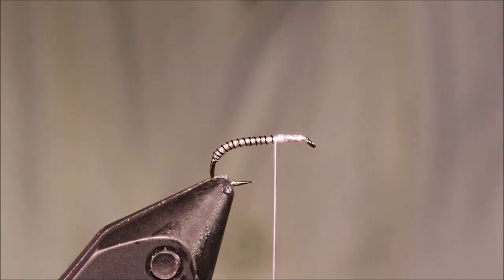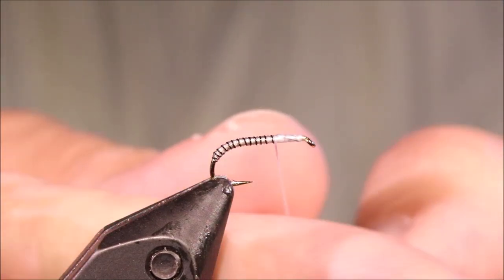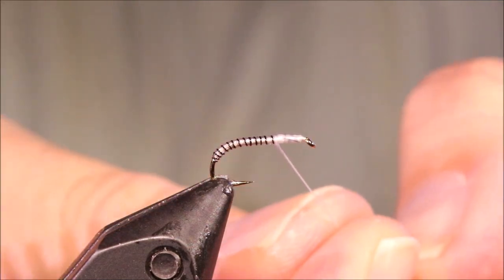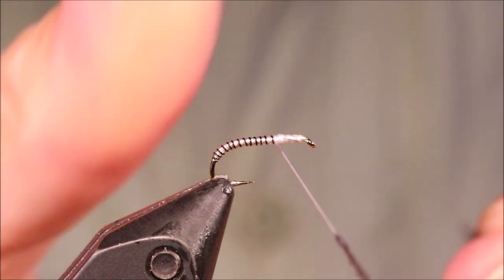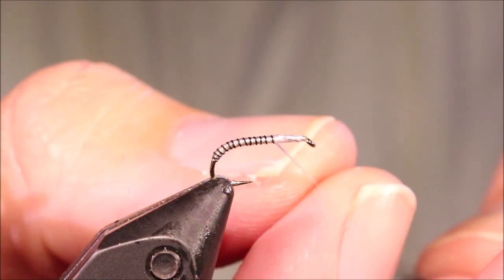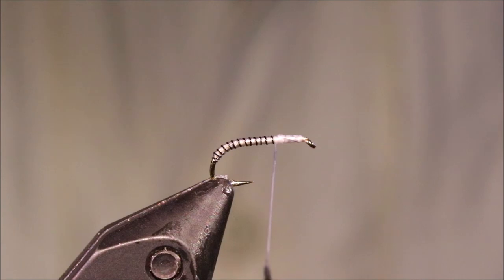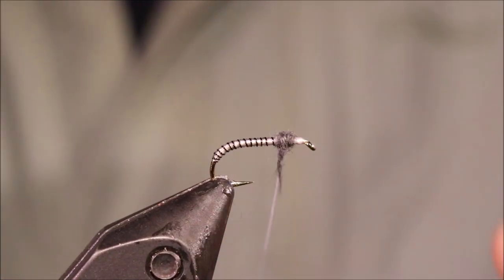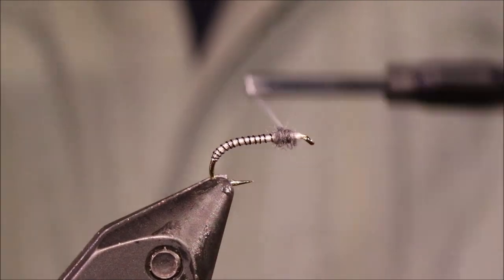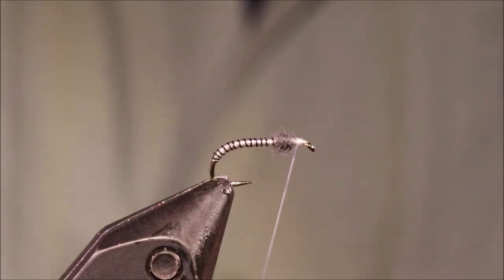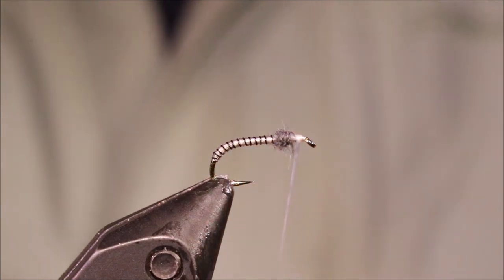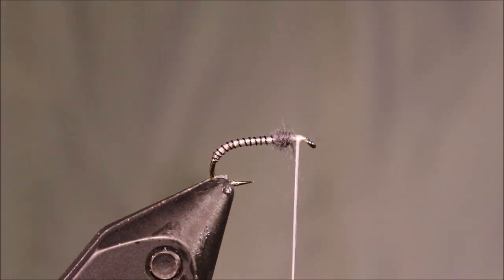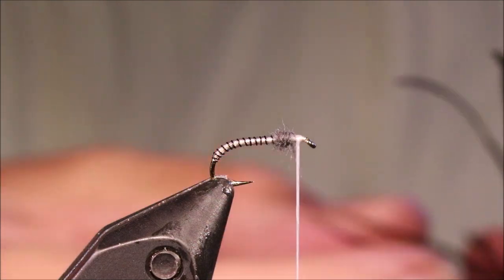So thorax is a wee bit of mole's fur. Again, you don't need to be building a big thick thorax. Keep it nice and slim. This whole fly is a skinny wee creature.